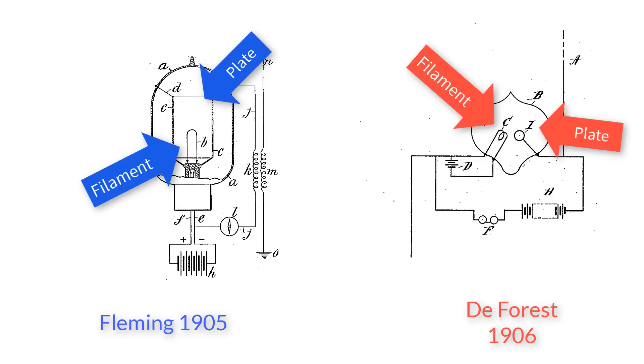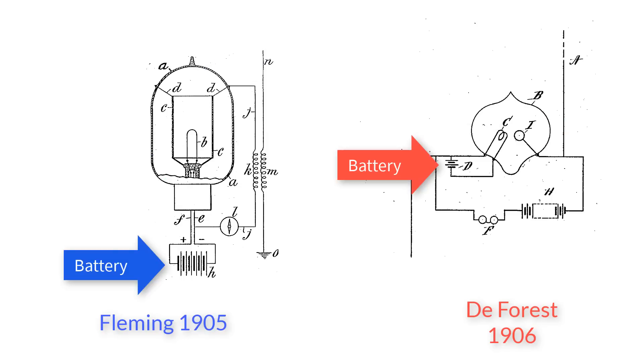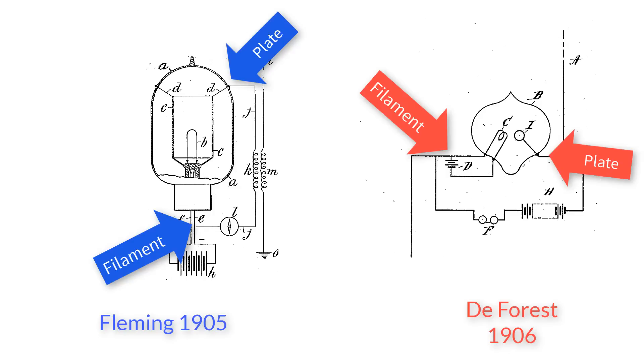They both had a filament and a plate in a vacuum tube and heated the filament with a battery. They also both took a radio wave from an antenna and passed it through the valve between the plate and the filament. In fact, there are only four very minor differences.